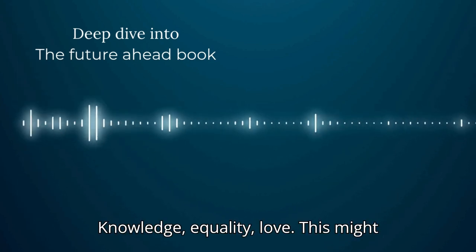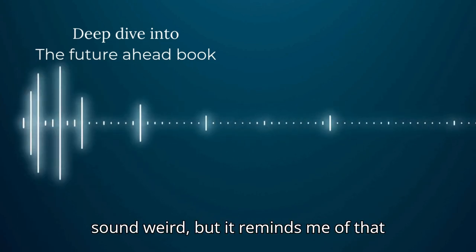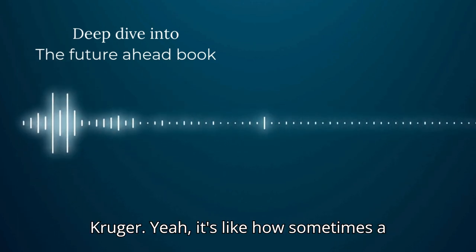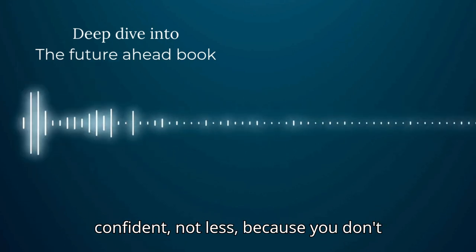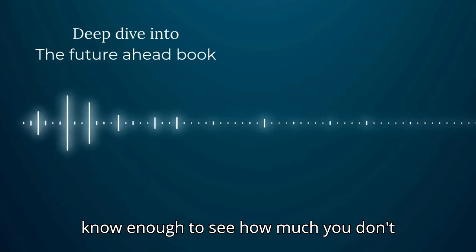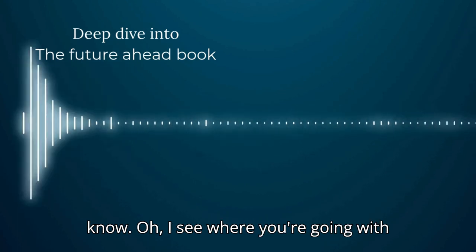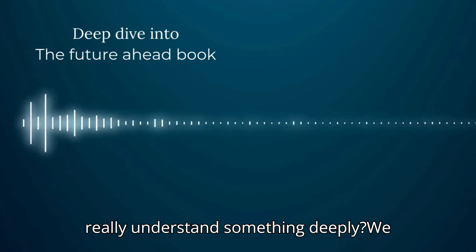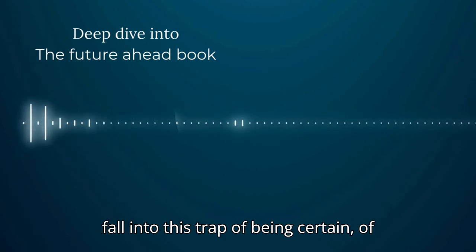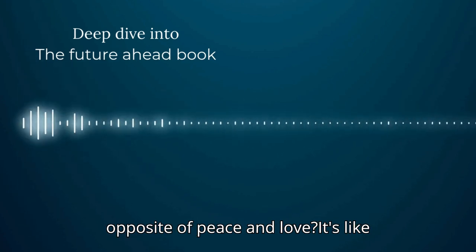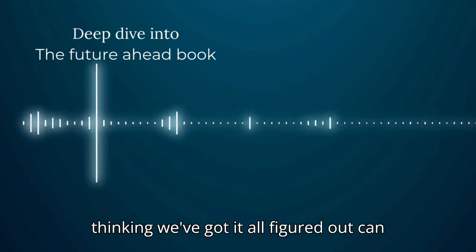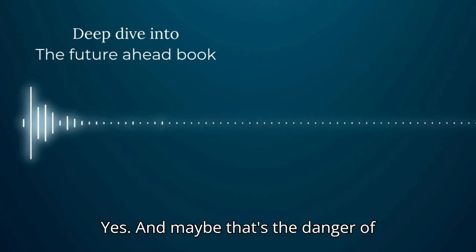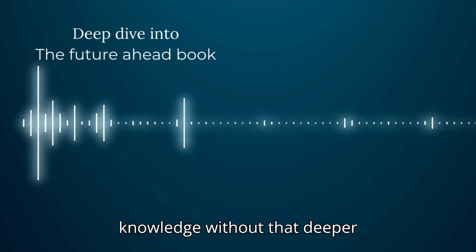This might sound weird, but it reminds me of that thing, the Dunning-Kruger effect. Dunning-Kruger? Yeah, it's like how sometimes a little bit of knowledge can make you more confident, not less, because you don't know enough to see how much you don't know. Oh, I see where you're going with this. Like is it possible that until we really understand something deeply, we fall into this trap of being certain, of judging? And wouldn't that be the opposite of peace and love? It's like thinking we've got it all figured out can actually be the thing that holds us back.